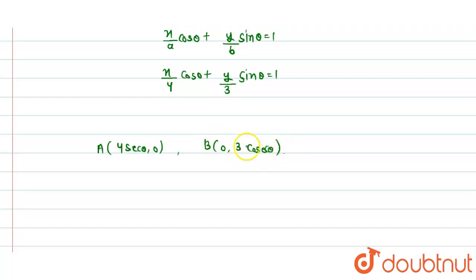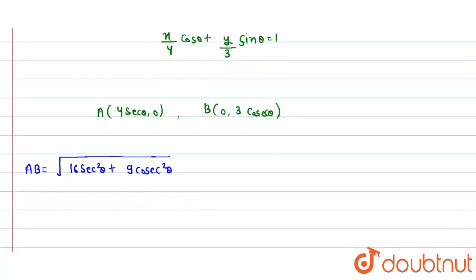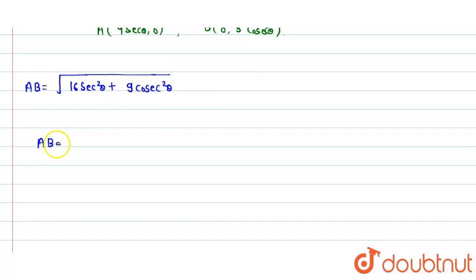So now A is (4secθ, 0) and B is (0, 3cosecθ). We need to find the value of AB which should be minimum. AB = √[(4secθ)² + (3cosecθ)²] = √[16sec²θ + 9cosec²θ]. Using identities: sec²θ = 1 + tan²θ and cosec²θ = 1 + cot²θ, so AB = √[16(1 + tan²θ) + 9(1 + cot²θ)].